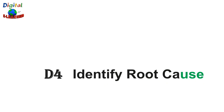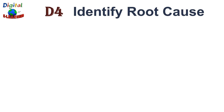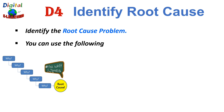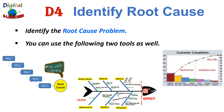The fifth D is D4 — Identify the Root Cause. With the problem temporarily contained, you can now focus on identifying the root cause. Root cause must be identified to take a permanent action to eliminate it. Tools you can use include: the 5-Why method, where you ask 'why' five times to reach the root cause; the fishbone diagram, also known as the Ishikawa diagram, where causes are categorized using the 6M framework — Mother Nature, Material, Method, Manpower, Machine, and Measurement; and finally the Pareto chart to identify the vital few from the significant many.